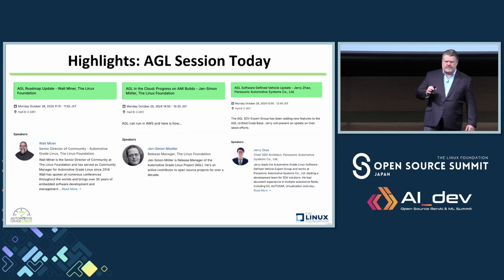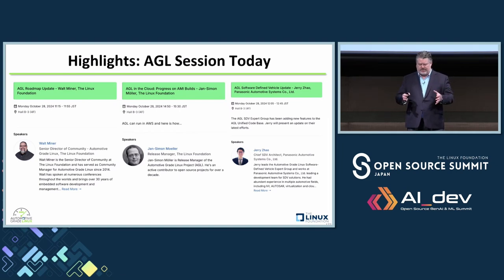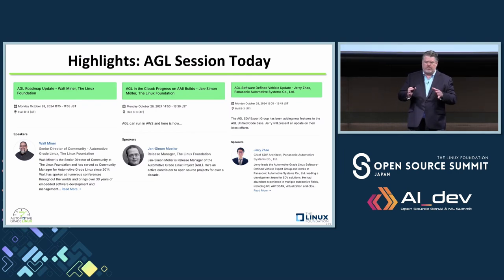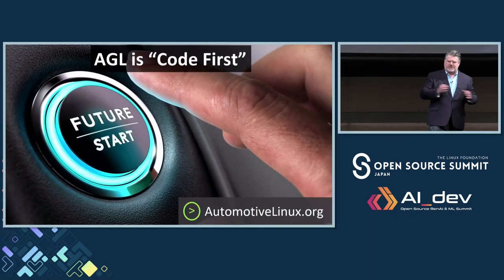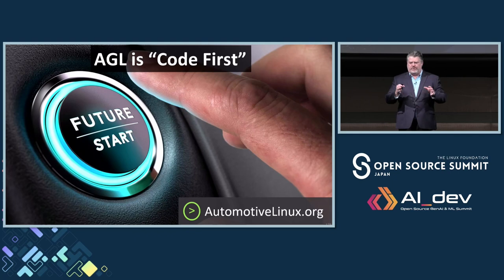Just to highlight a few sessions happening today: if you want to learn more about AGL, the roadmap, and UCB in much more detail, please go see Walt Miner's session at 11:15. If you want to learn more about AGL in the cloud and running on AWS, go see Jan Simon's session at 2:50 p.m. And if you want to learn more about software-defined vehicles, please go see Jerry Zhao's session from Panasonic at 12:05 p.m. We'll also have sessions on OSPO. AGL is code first — we've always been code first, and I've been saying that for eight or nine years. We're really proud of the progress AGL has made, and that's all thanks to your contributions and the amazing community, especially in Japan. Thank you very much.